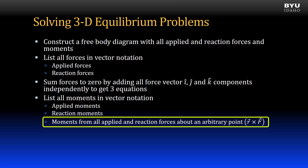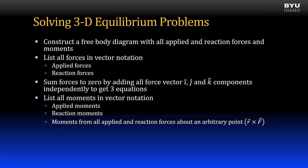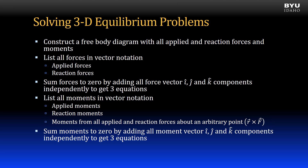We will get each moment by crossing a position vector from the point with the force vector. Once we have all our moments listed, we will sum moments to zero by adding all moment vector i, j, and k components independently, setting each of them to zero to get three equations. We will have six equations that we can then use to solve for our unknowns. Let's apply these steps in an example.